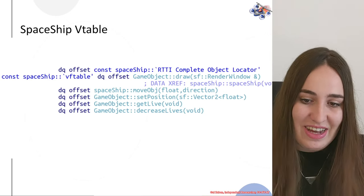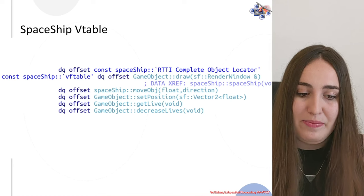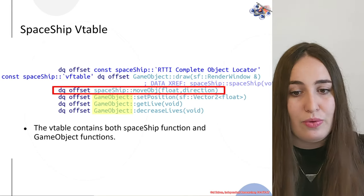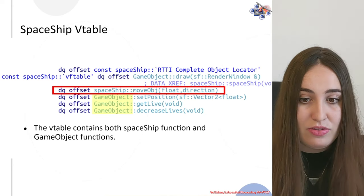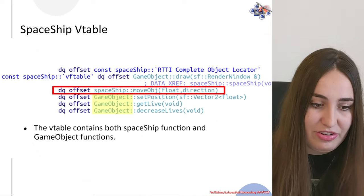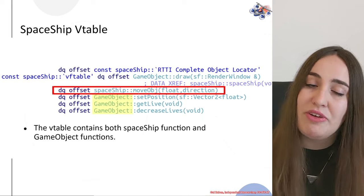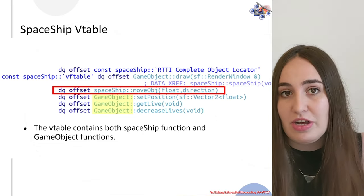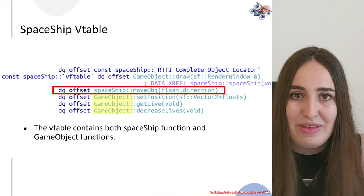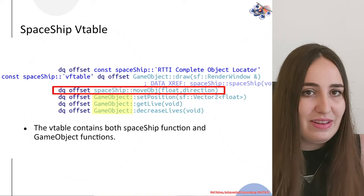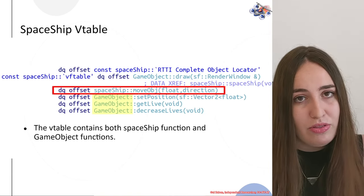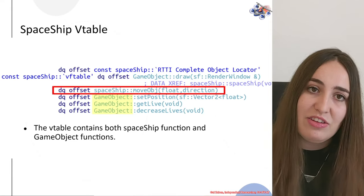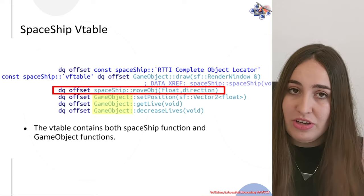After understanding RTTI, we can dive into the functions in this vtable. The vtable contains both game object functions and one spaceship function — the spaceship move object — along with other game object functions. Because we have symbols, we can see which function correlates to which object. In examples without symbols, you typically only have auto-generated names like 'sub_' followed by a number, and in those cases you would not know which function correlates to which object.